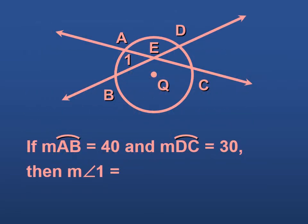That's going to be equal to the sum of the arcs divided by two. And since we know that arc AB is 40 and arc DC is 30, we add those together, we get 70, then take half of that, and we get 35.